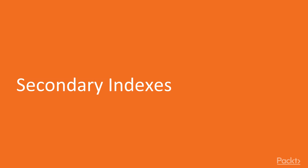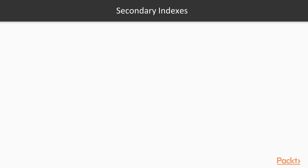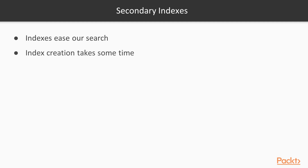Let's get started with indexes. As in conventional databases, secondary indexes are created to ease our search based on non-key columns and save us from scanning the whole table. Now, index creation can take from several minutes to many hours. The time needed depends on the size of the dataset, the number of nodes in the instance, and the load on the instance.